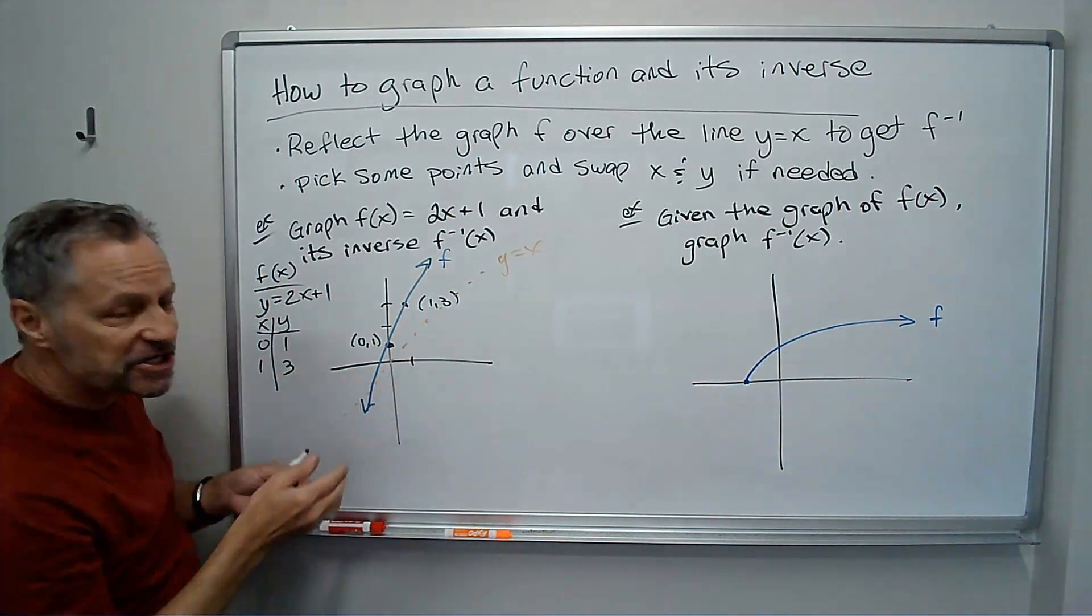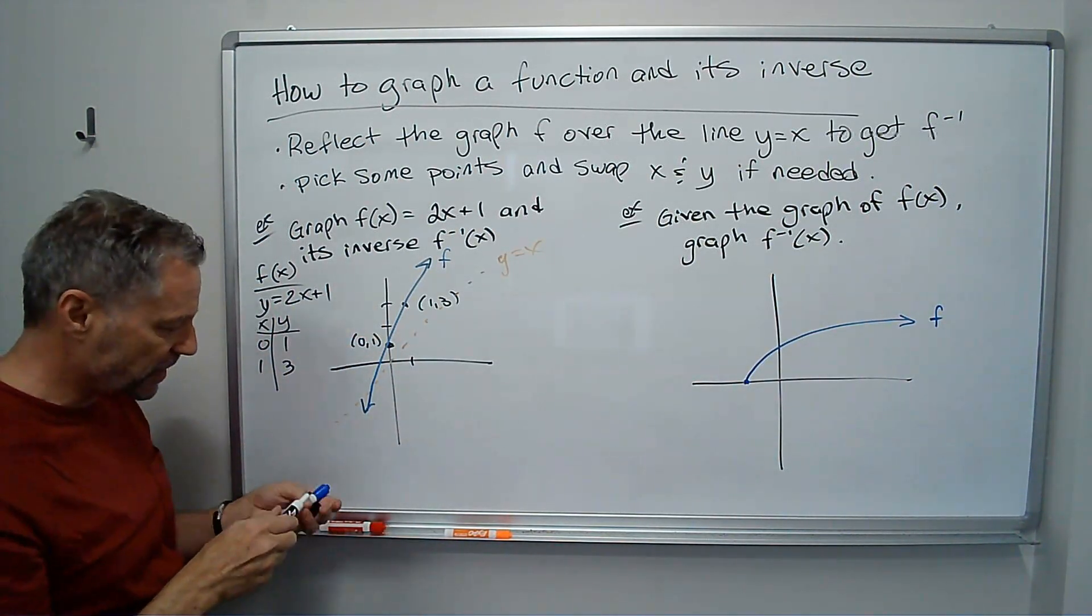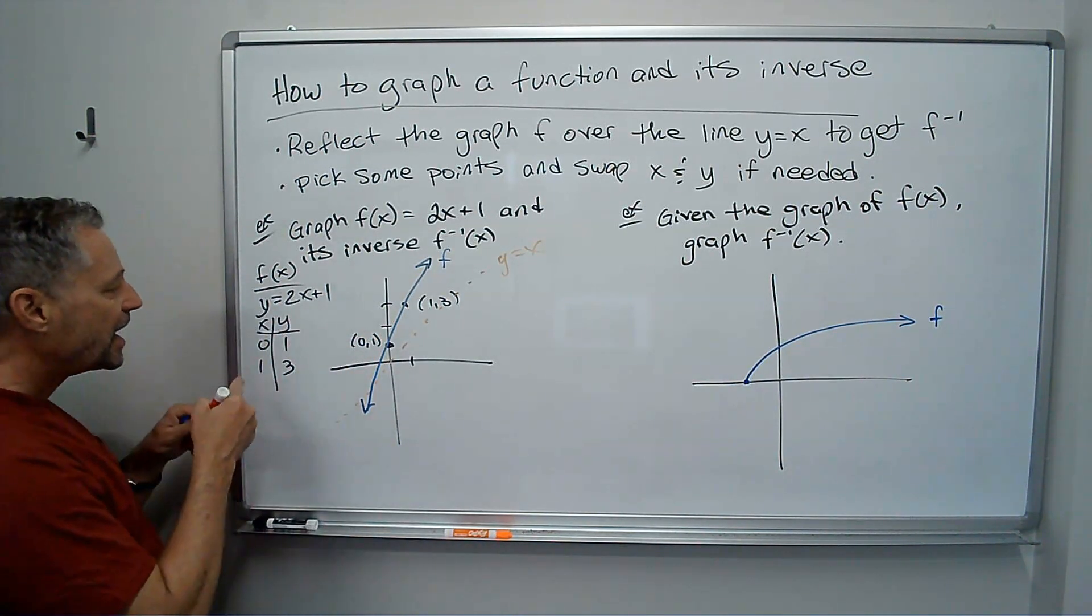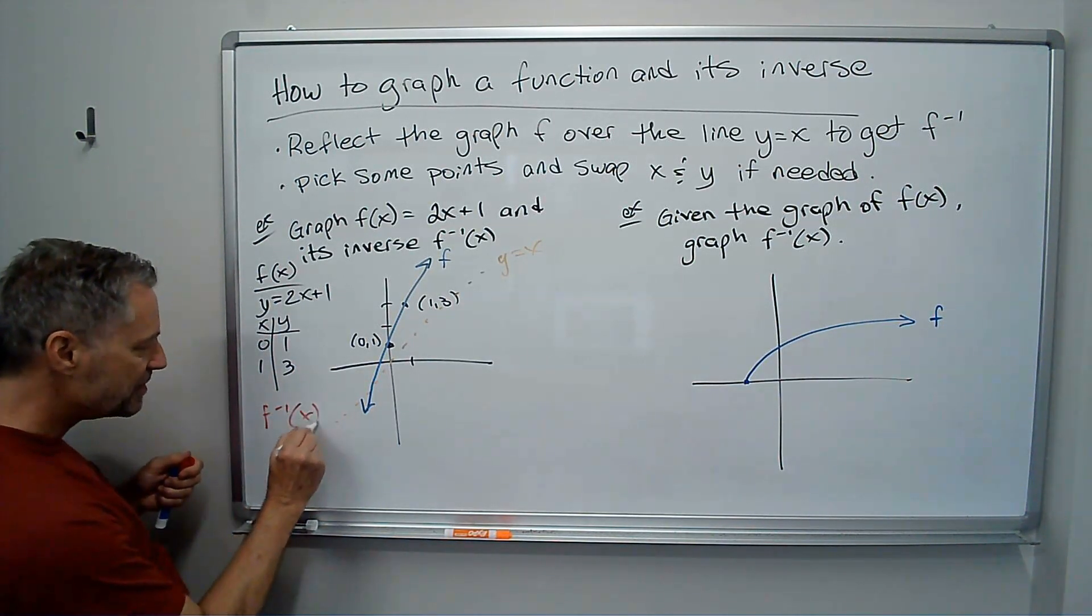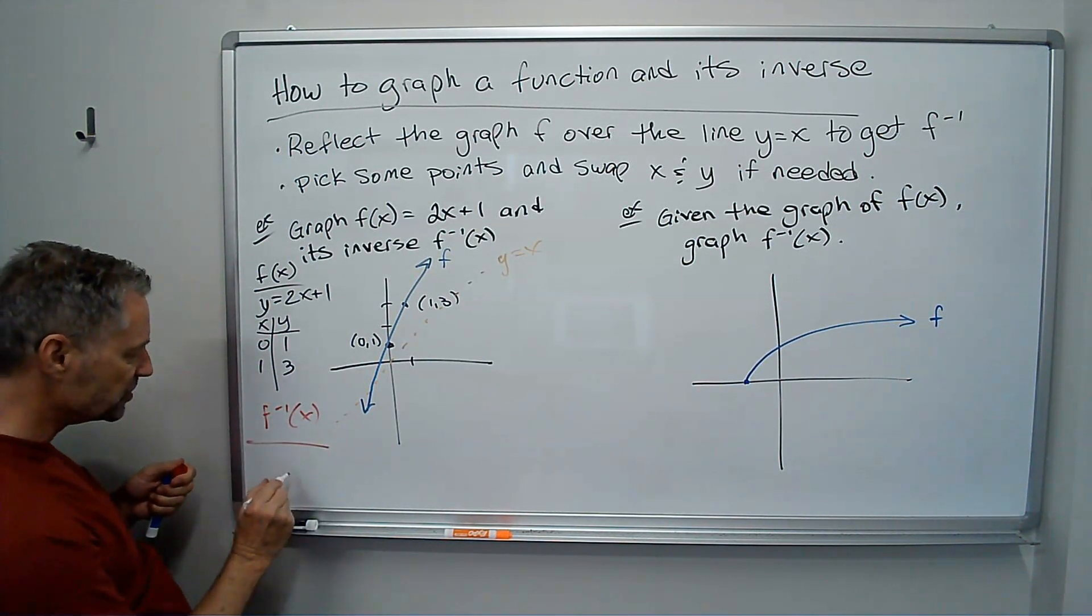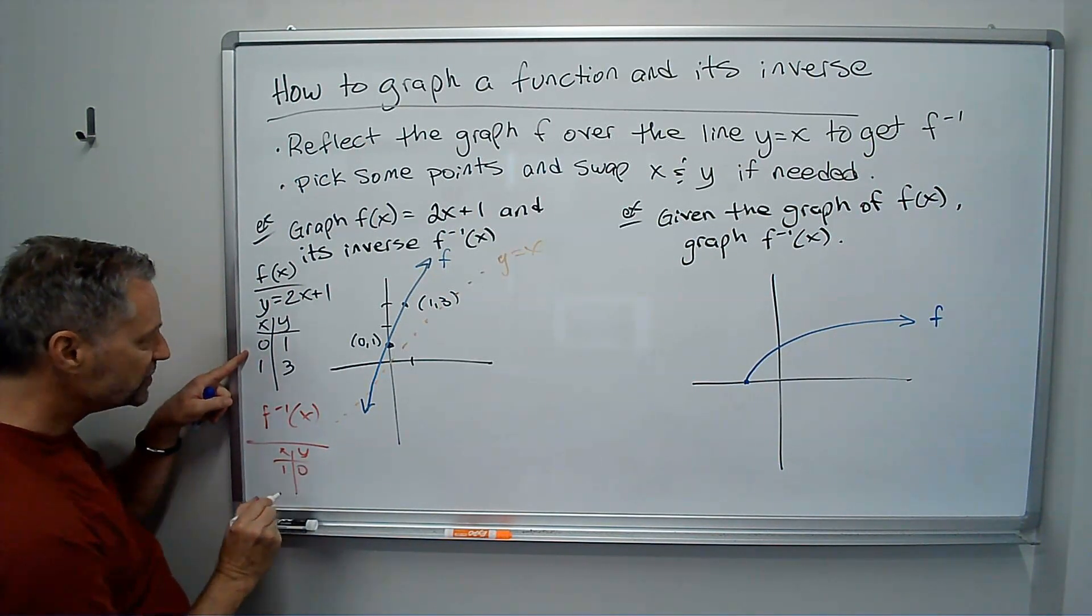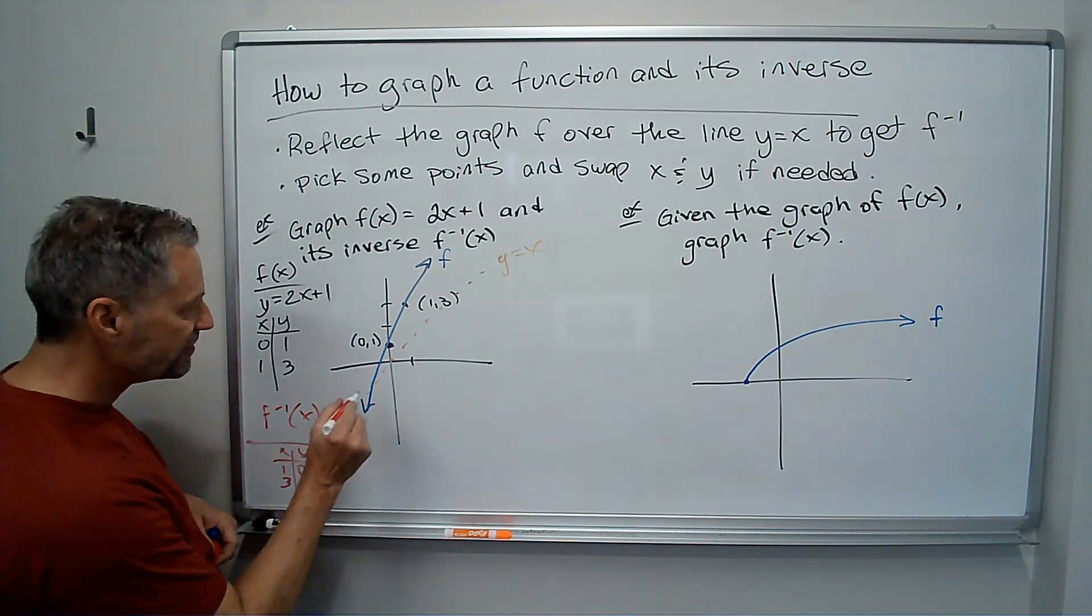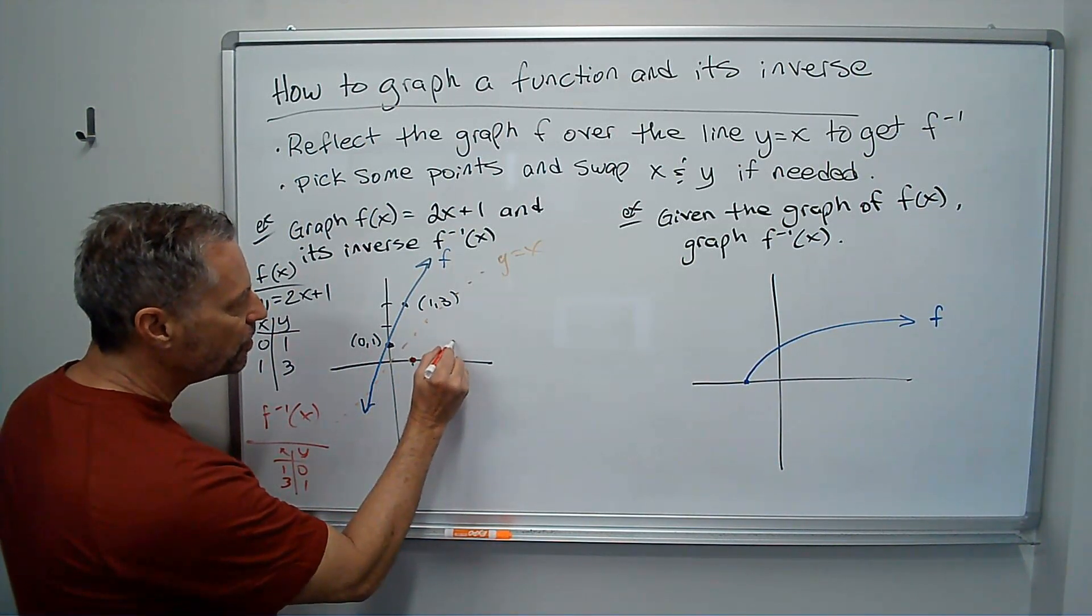And it's the reflection across that. Now, if I need help, let's just swap some of these points. So I'll do this graph in red. I had 0, 1 for my function. So for my inverse, I'm just going to swap x and y. Instead of 0, 1, I'm going to have 1, 0. Instead of 1, 3, I'm going to have 3, 1. And so I've got 1, 0. I've got 3, 1.